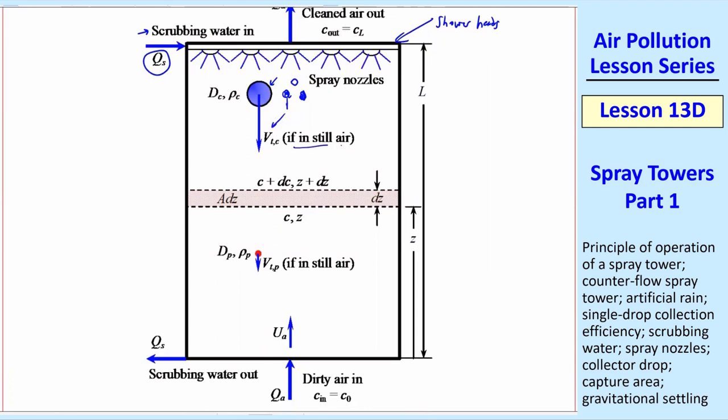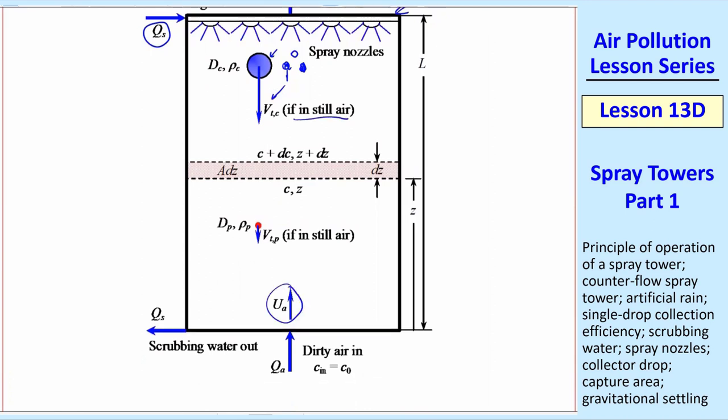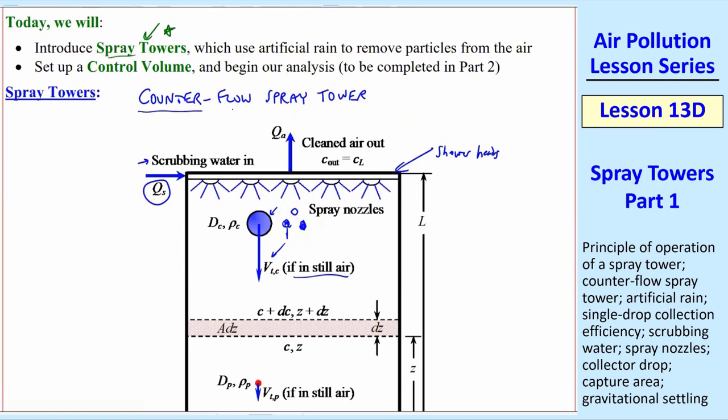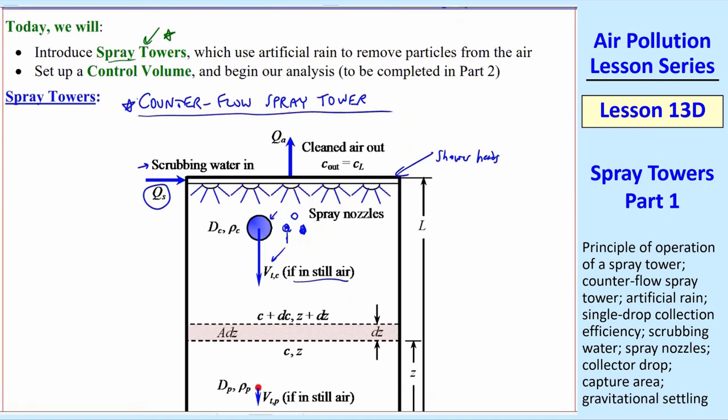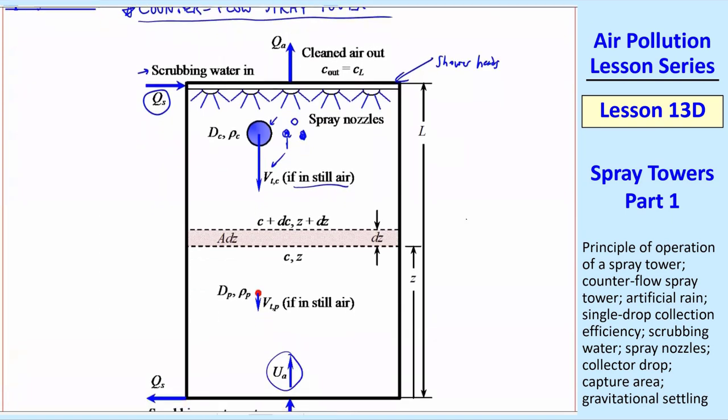And these raindrops fall at the speed VTC. That's if it's in still air. We also have air coming in from the bottom, this dirty air with some volume flow rate QA and a speed UA going up. This is why we call this a counterflow spray tower, which is the most common type. The air is moving in a direction counter or opposite to the water drops that are falling. So the air is going up and the water is coming down.